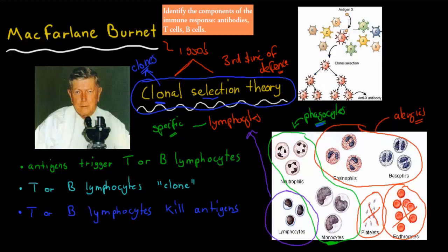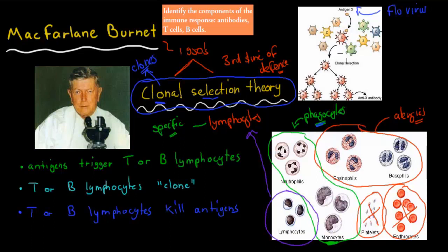Now why does it make clones? Well, this is lymphocyte X, and lymphocyte X came in contact with antigen X. So for example, let's say this might be the flu virus. This actual lymphocyte would be the lymphocyte which deals only with the flu virus. Whenever the flu virus comes, it can find it and basically duplicate, and then kill it. So that's the idea of the clonal selection theory — one antigen triggers one specific type of lymphocyte, and that lymphocyte then makes more copies of itself.